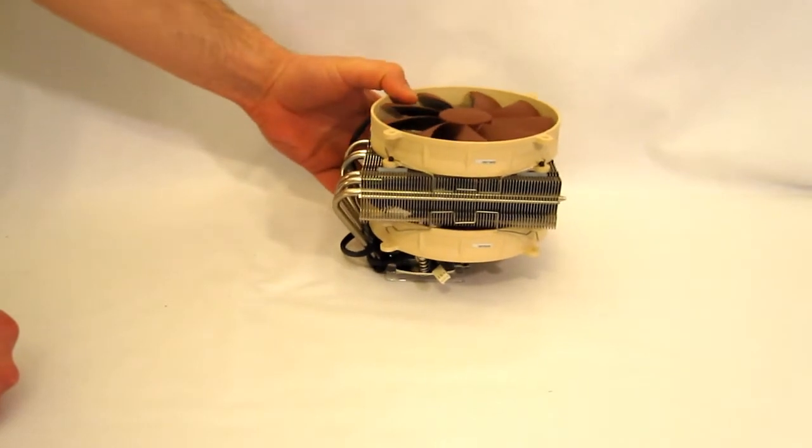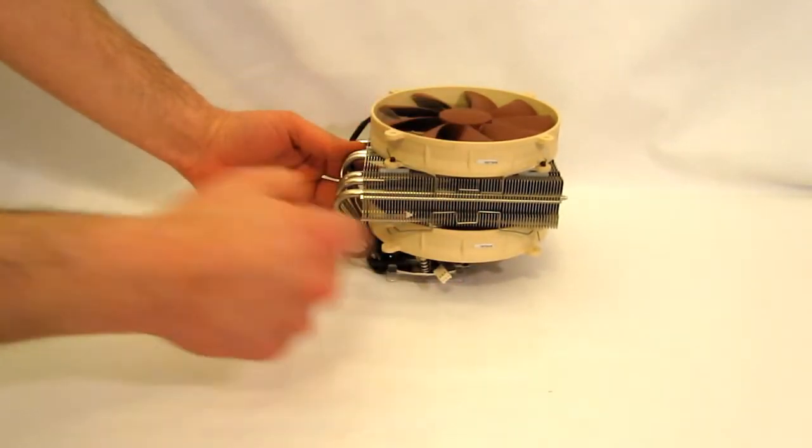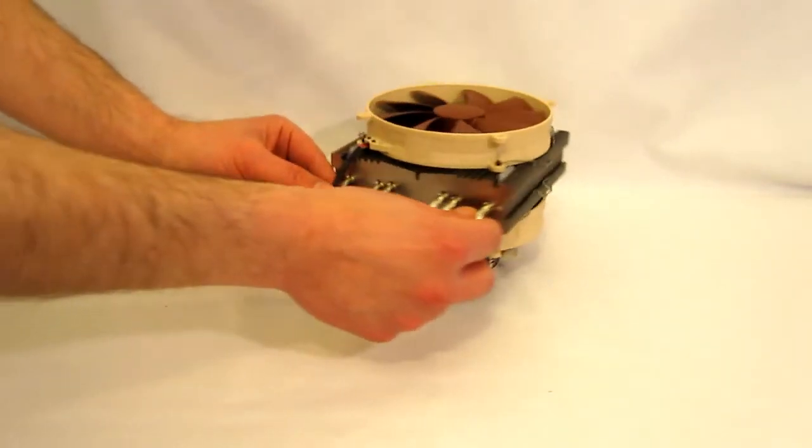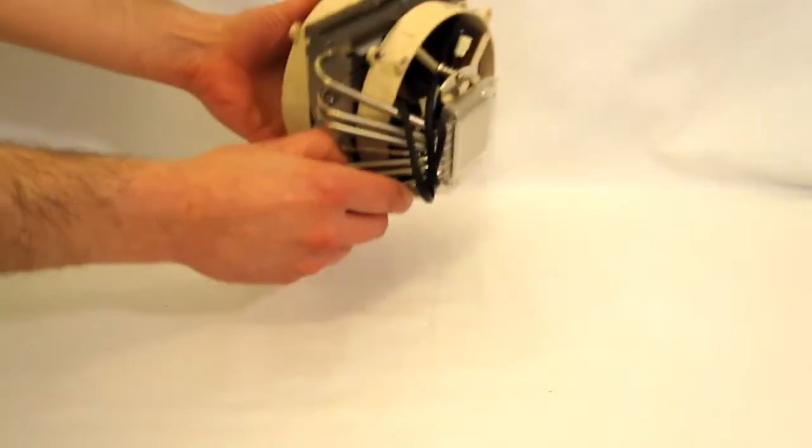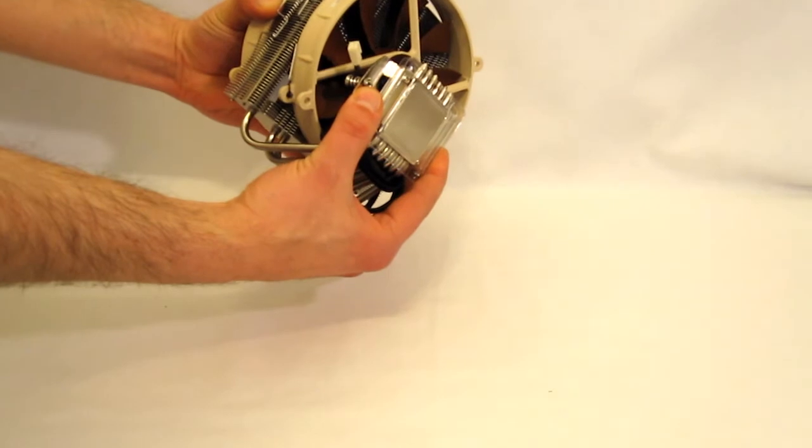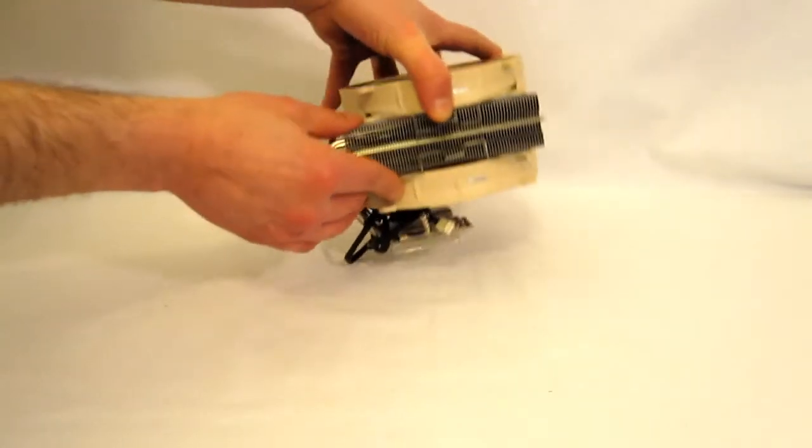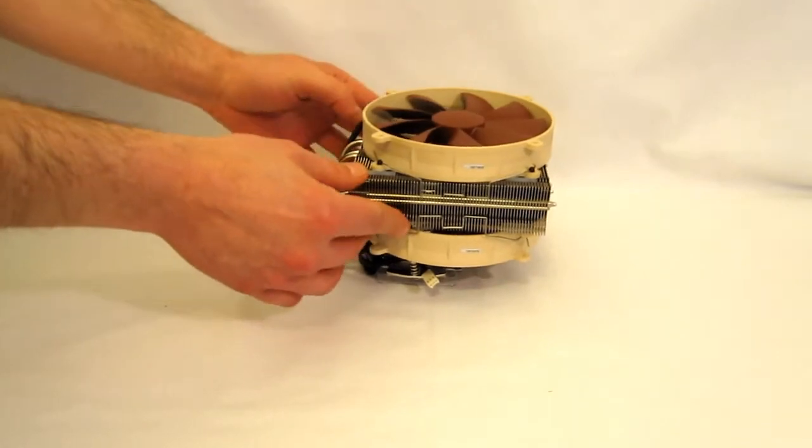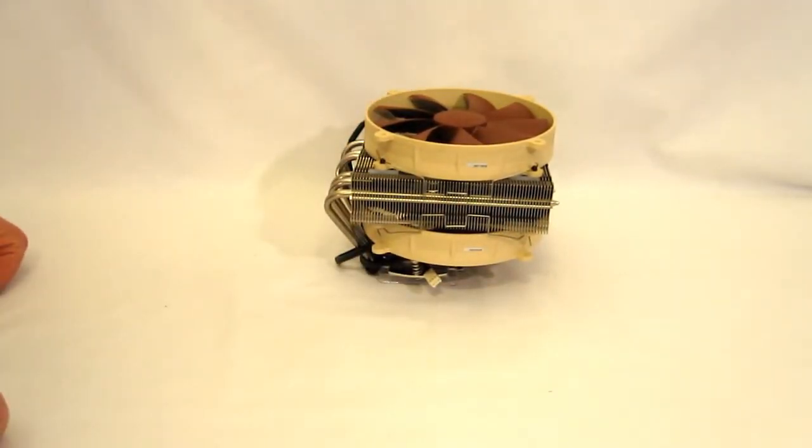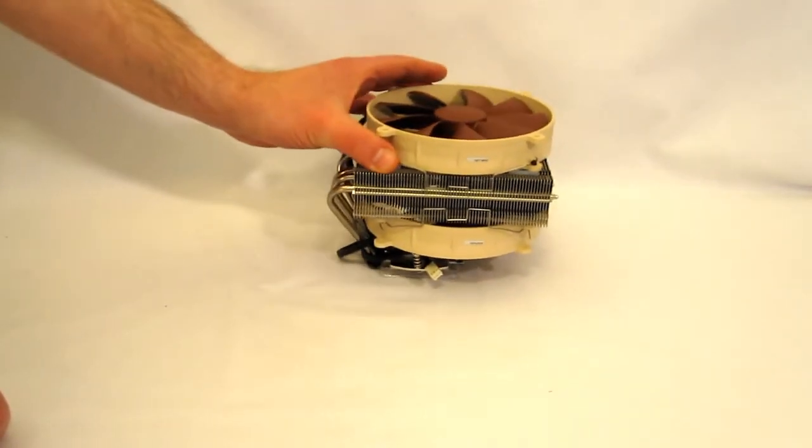As we've said, it's a C-type unit, shaped like a C. Airflow is through the unit this way. Six heat pipes, copper, nickel-plated. Cooling block, also copper, nickel-plated. As you can see, good amount of fins. 140mm worth. And the two NFP-14s pre-installed.